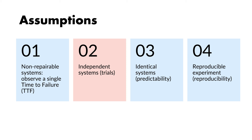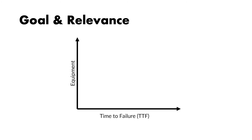So the behavior of one system — the failure of one — is not dependent on the behavior and failure of the other. The third assumption has to do with the fact that the systems should be identical, in terms both of design and operating conditions. If they are so, it is much easier to predict their behavior, because we can extrapolate the behavior of a set of systems to other sets of systems. The fourth assumption has to do with reproducibility: the experiment of monitoring the lifetimes of different equipment should always be reproducible.